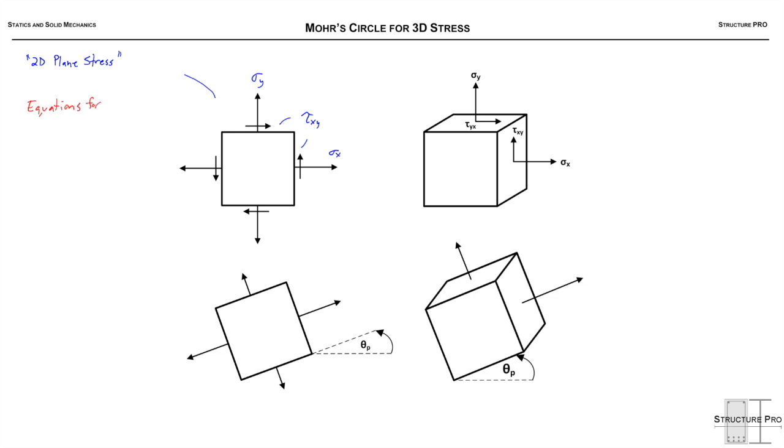And we know that we have equations for transformation that we can use to rotate this and find different stresses for different angles of rotation. And in particular, we can find the principal stresses which are key. They're when the shear stresses disappear on the faces of the element and we're left with the maximum and minimum values of normal stress.